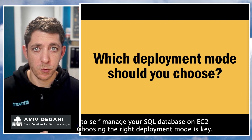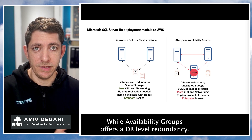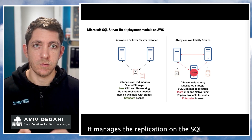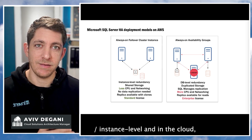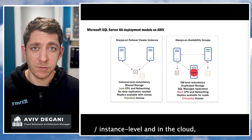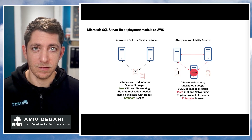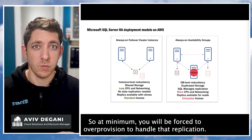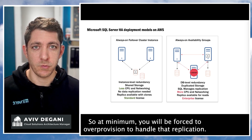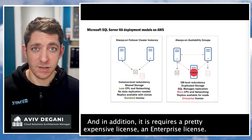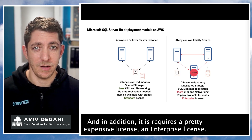Choosing the right deployment mode is key. While Availability Groups offers a DB-level redundancy, it manages the replication on the SQL on the instance level. And in the cloud, the bandwidth is limited by the instance size, so at minimum you will be forced to over-provision to handle that replication. In addition, it requires a pretty expensive enterprise license.